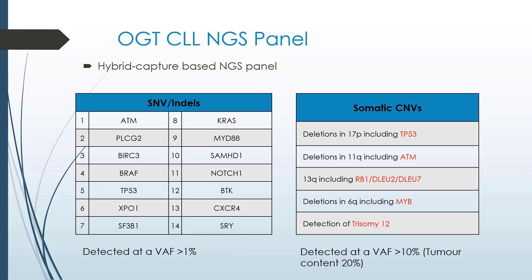The CLL NGS panel is a hybrid capture-based NGS panel. It has 14 genes where you can detect SNVs or indels with a detection limit of greater than 1% VAF. There are five loci that are assessed for somatic CNV calling. We do not look at 6q deletions, nor did we find any within this proof of concept. The estimated tumor content detected by this assay is stated to be 20%, or a VAF of 10%.